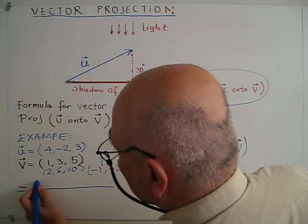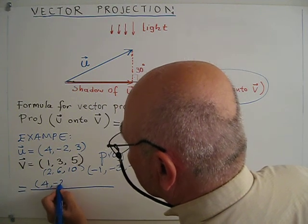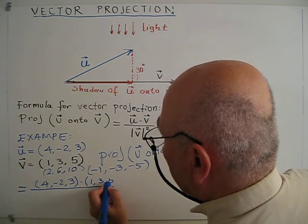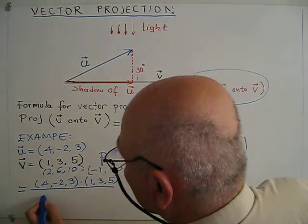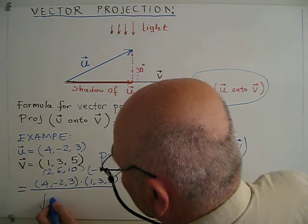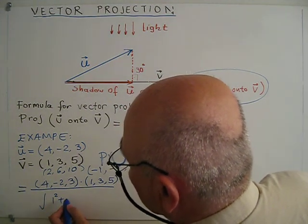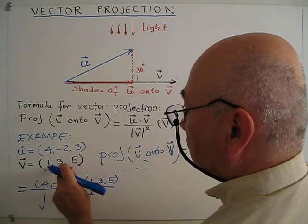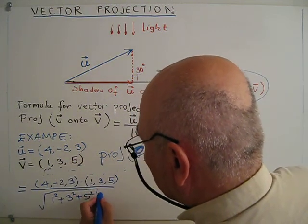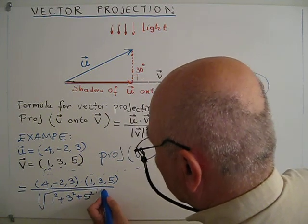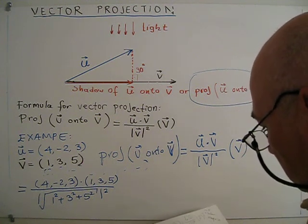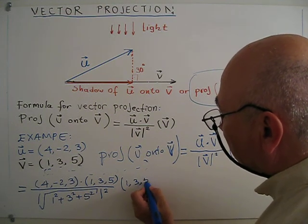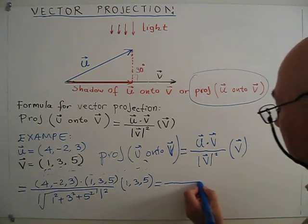If I plug the values into the formula, U will be (4, -2, 3) dot V (1, 3, 5). What is the magnitude of V? As we know from previous formulas, 1 squared plus 3 squared plus 5 squared. I don't use these two, I just use this one. Then square root, this is absolute value, but anyway we square it, it will be absolute. We write vector V: 1, 3, 5.